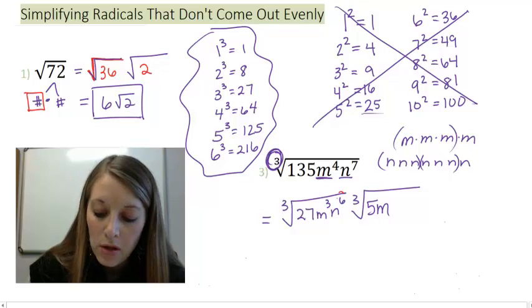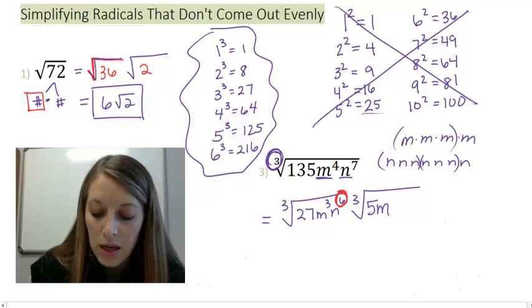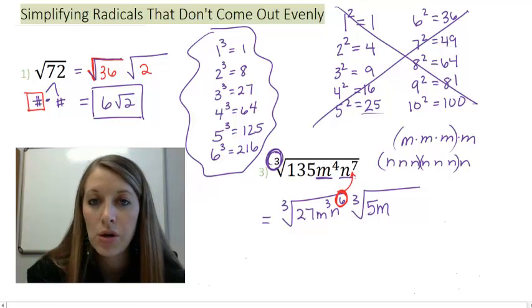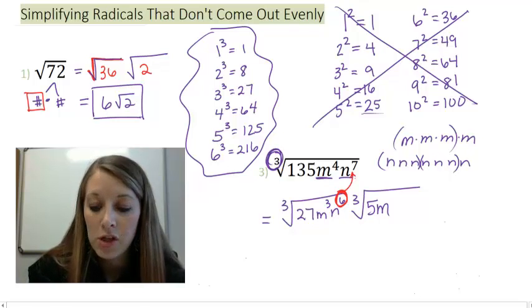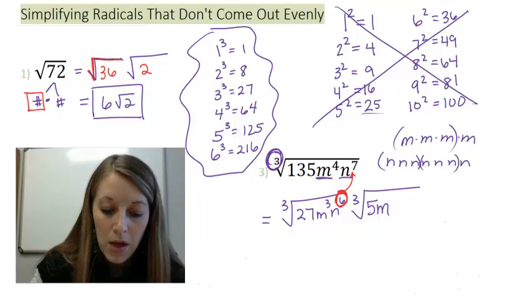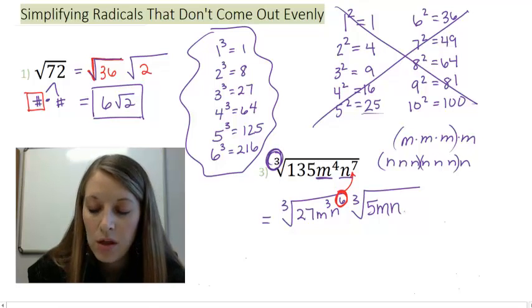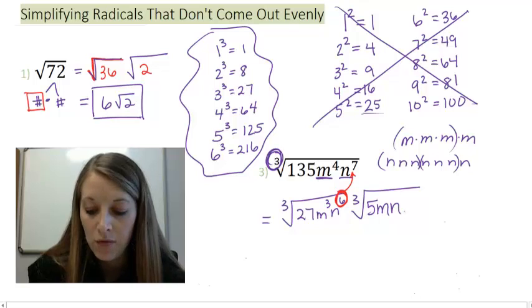So really, what you want to do is pull out the largest multiple of 3 that fits into your exponent in the first place. So 6 is the largest multiple of 3 that goes into 7. Which that means I am left with 1 of these n's left over. 6 here plus 1 there gives me 7 total.